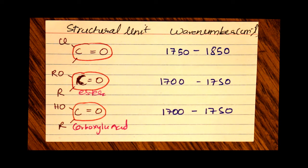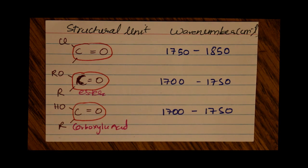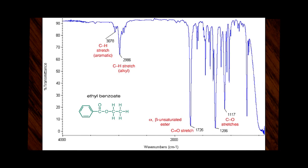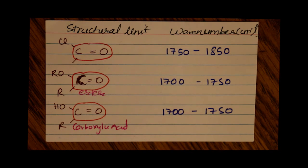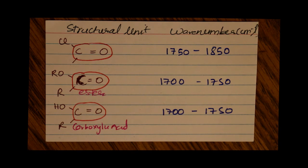For a carbon double bonded to an oxygen in an ester, as seen here, the peak shows up in the range of 1700 to 1750. For a carbon double bonded to an oxygen in a carboxylic acid, the peak shows up between 1700 and 1750, as seen here.